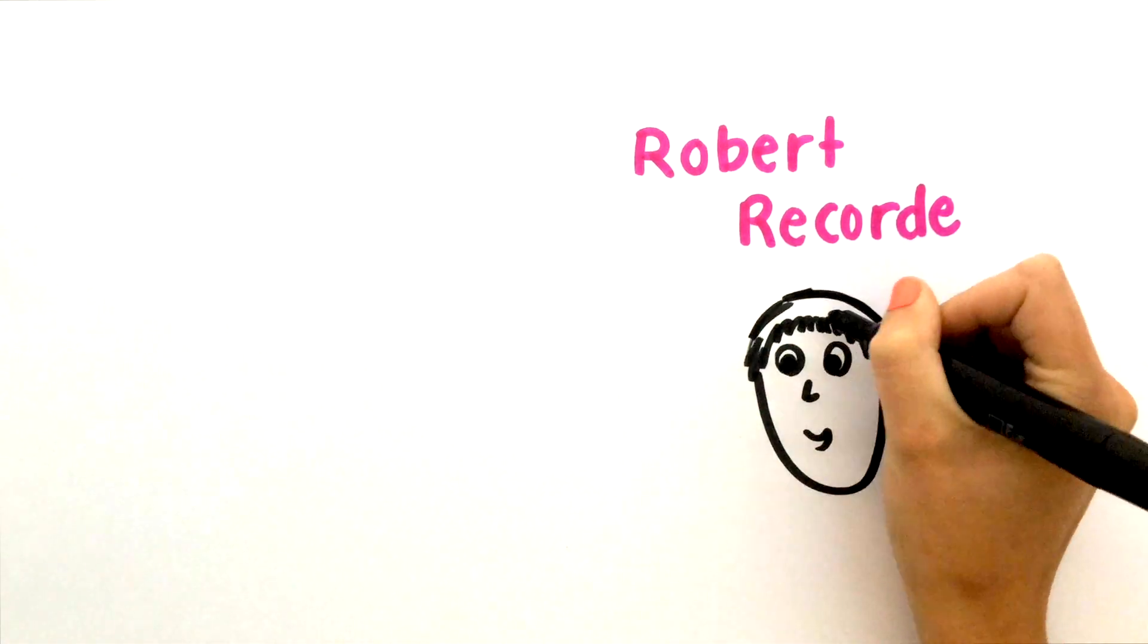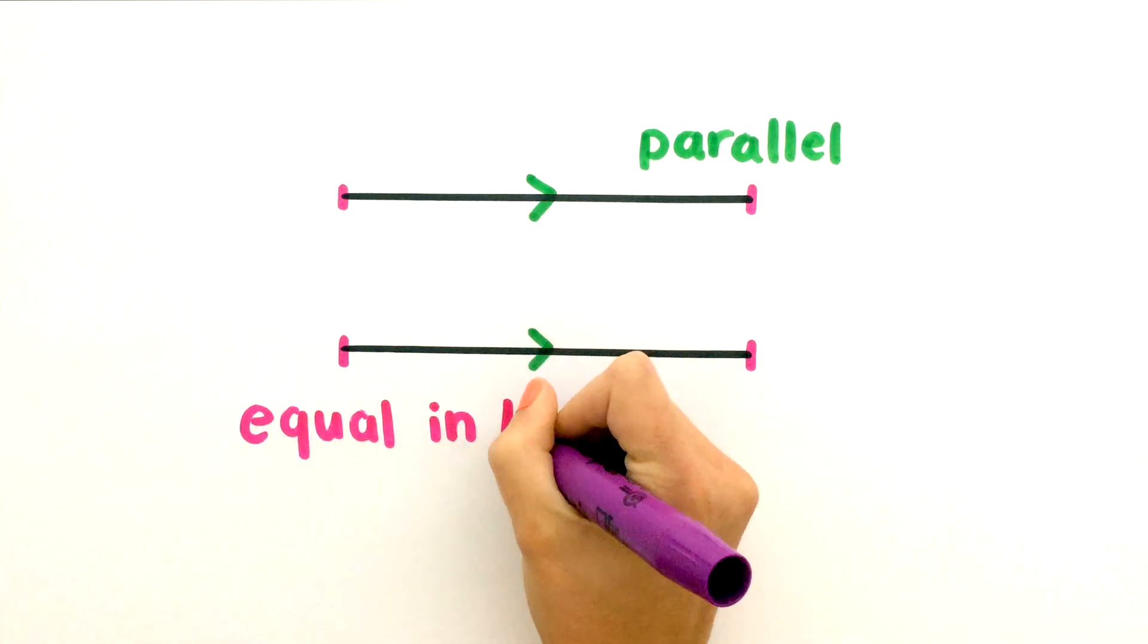The equal sign was first invented by Robert Record all the way back in 1557. To create it, he took two parallel lines that were equal in length.